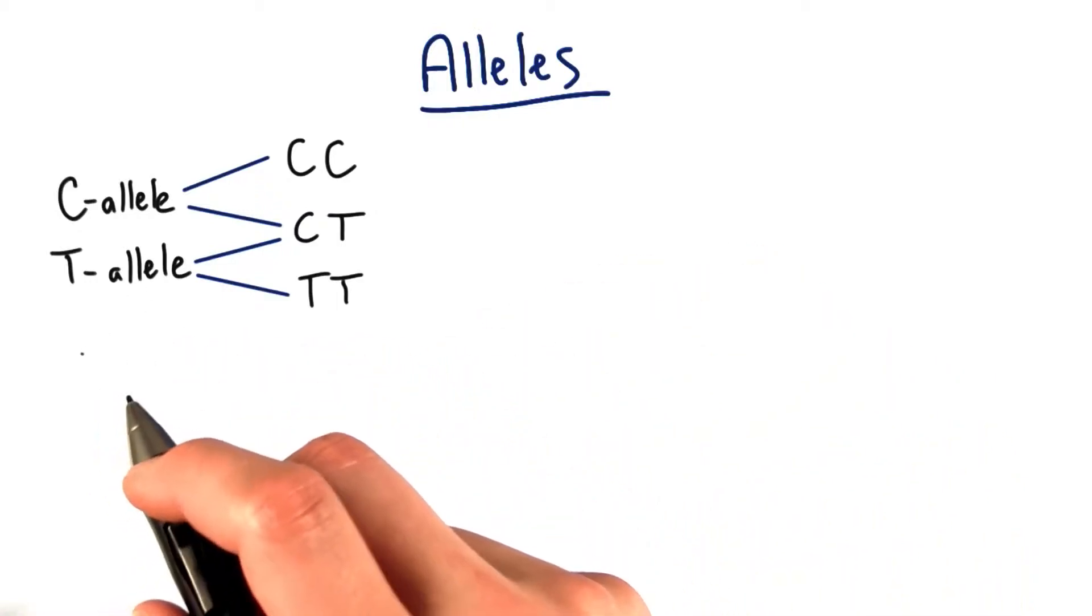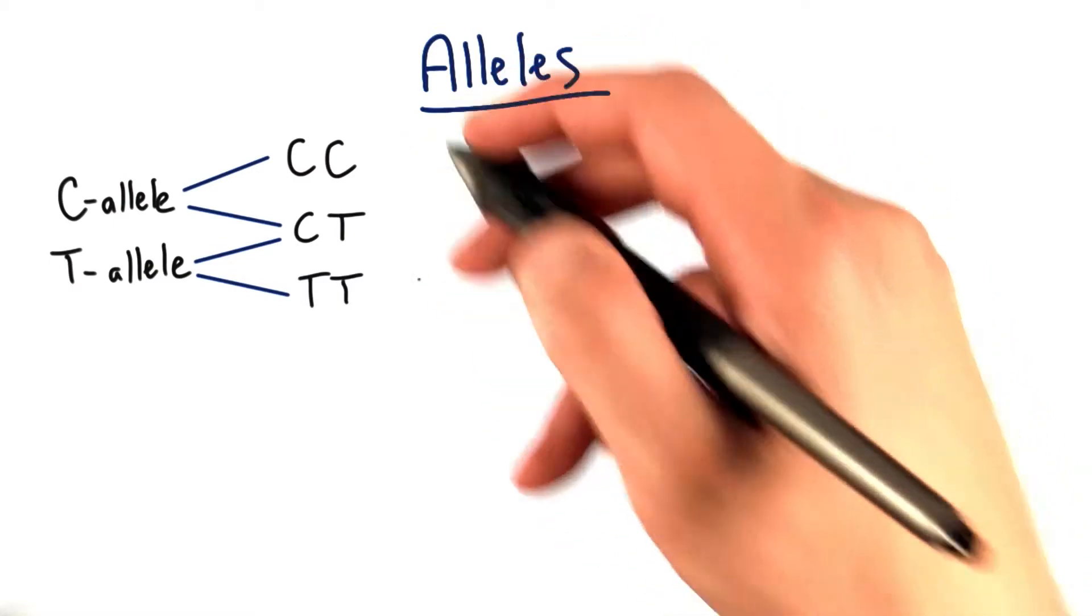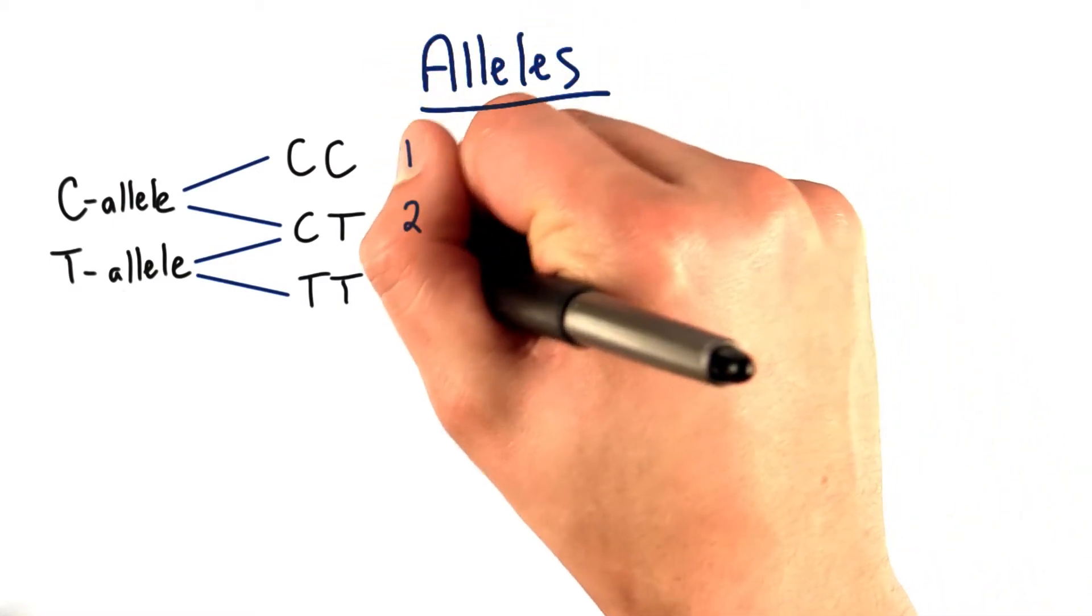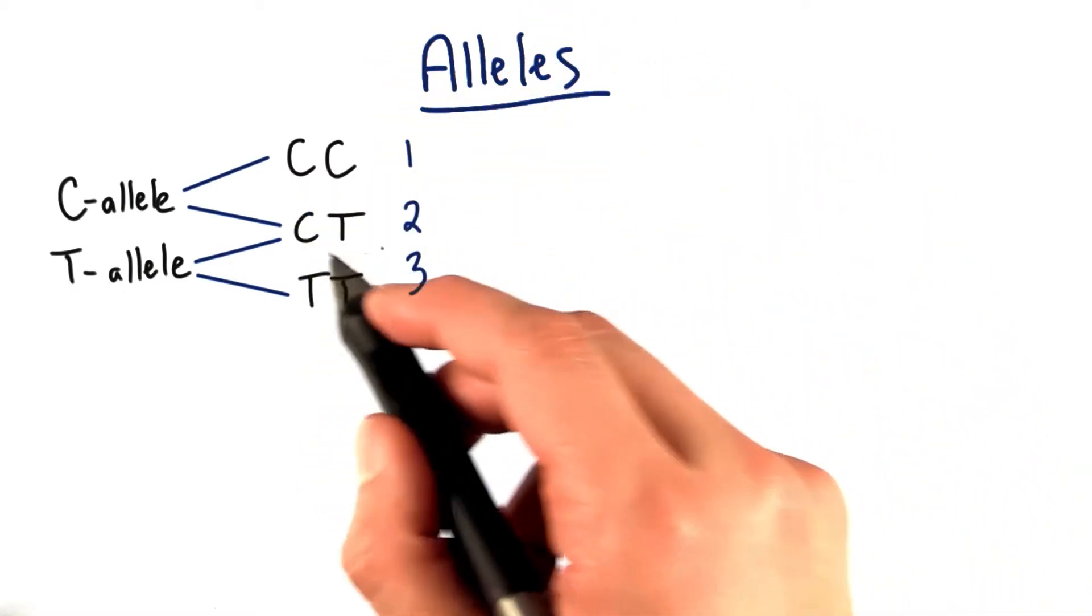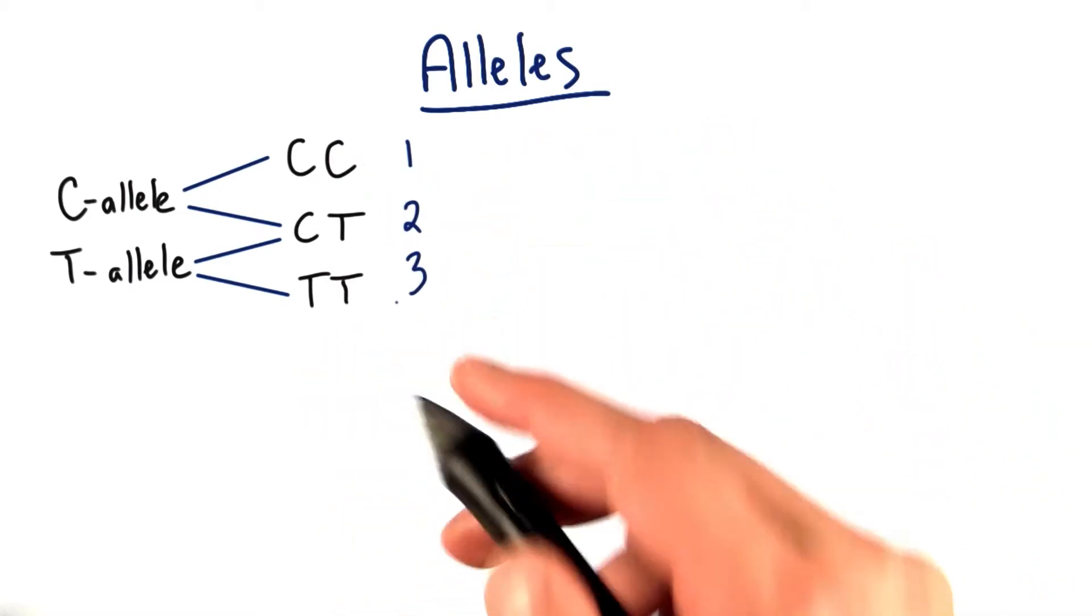Now when we're discussing two possible alleles, we realized in the last exercise that we can get three possible allelic combinations. In this case, two cytosines, a cytosine and a thymine, or two thymines. We might just say CC, CT, or TT.